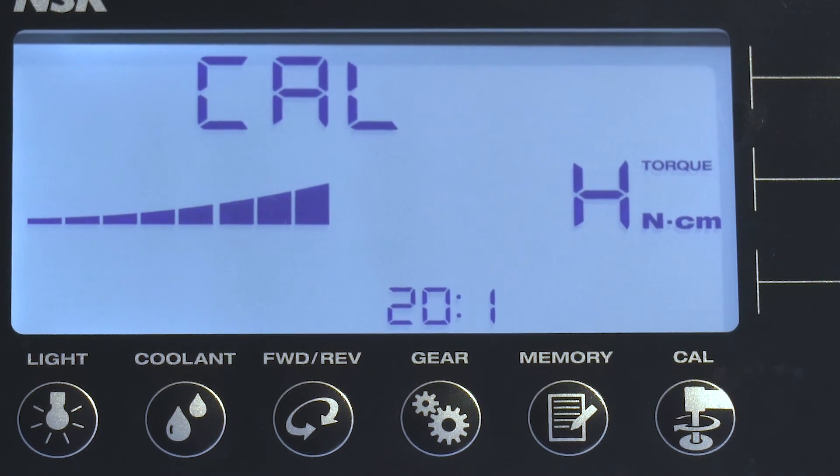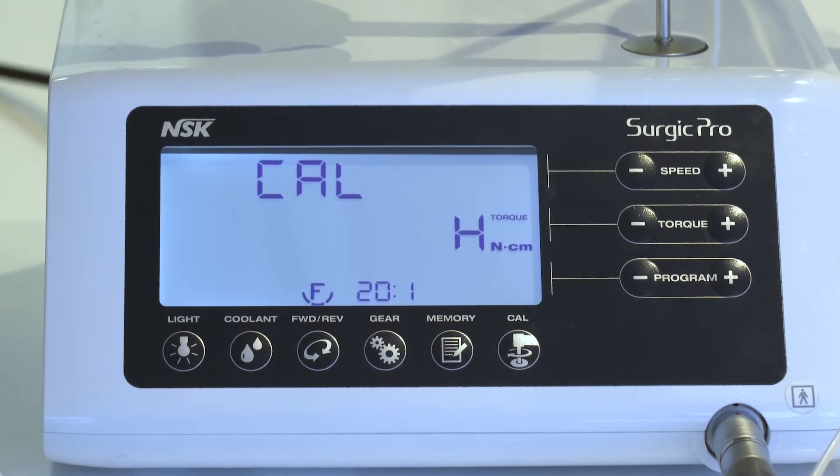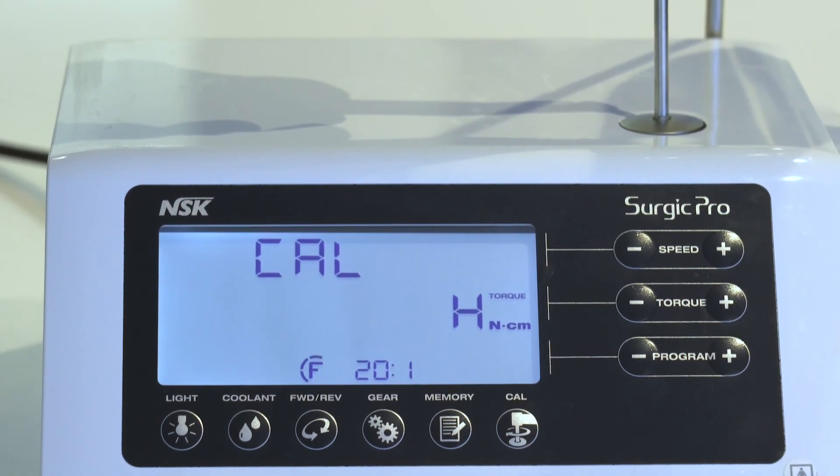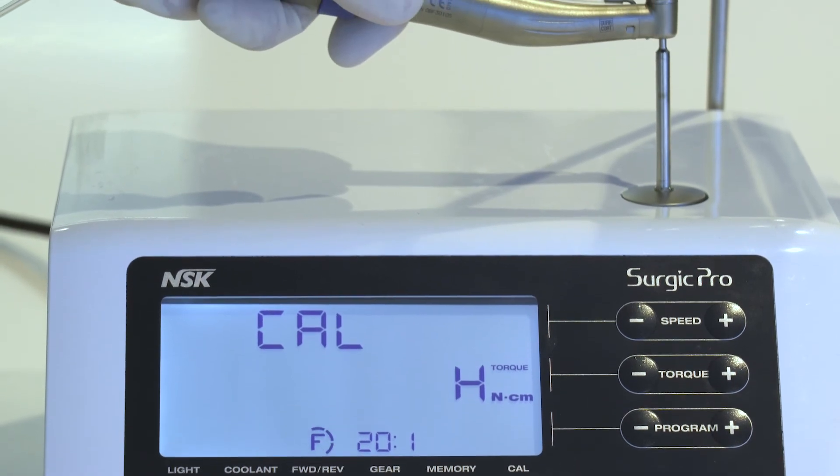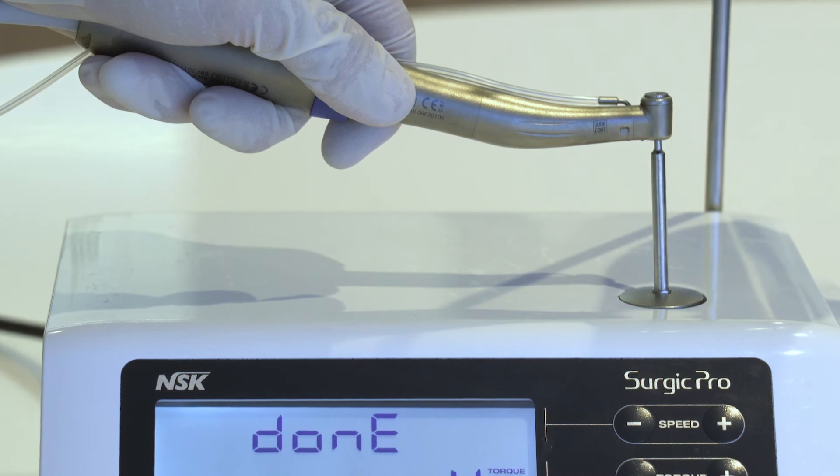The calibration is done while applying torque load so securely hold the handpiece. The calibration bird will begin to rotate. Calibration is complete when there is a beep and done appears on the display.